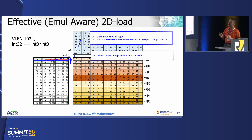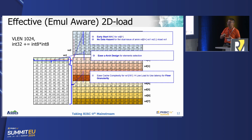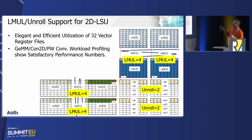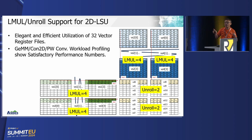Furthermore, this architecture provides a benefit that we do not need to load all registers before starting computation — the load-to-use latency is mitigated by fine granularity for each portion. Based on these load-store instructions, software programmers can also leverage standard RVV advanced features like LMUL and unrolling. Here is an example showing how a software programmer can use LMUL4 and unrolling to elegantly and efficiently use all 32 vector registers available to form a very efficient matrix multiplication kernel as shown on this page.